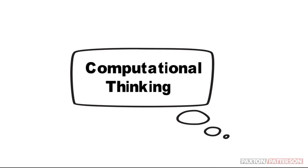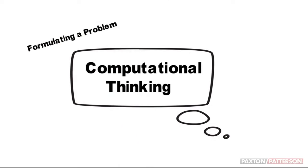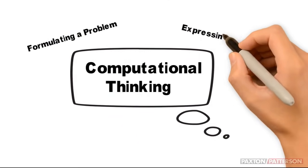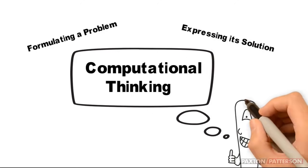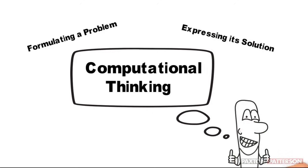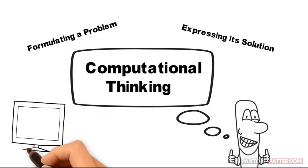Computational thinking is the thought process involved in formulating a problem and expressing its solution in such a way that a computer, human, or machine can effectively carry it out. Computational thinking involves four steps.